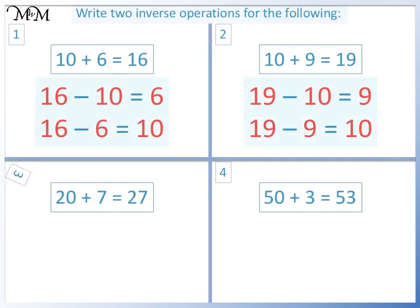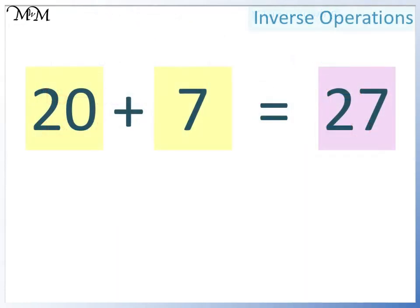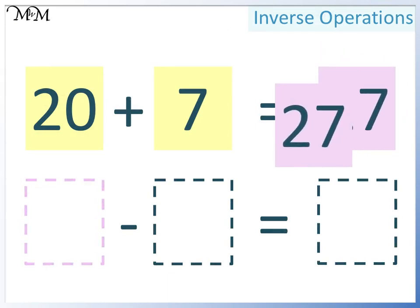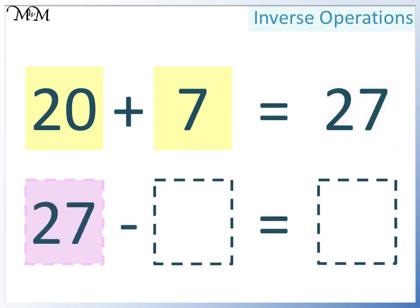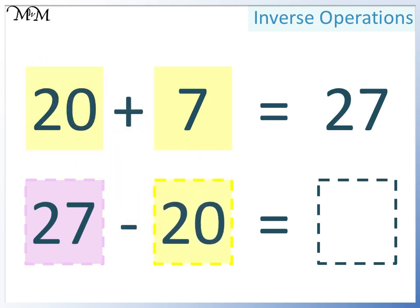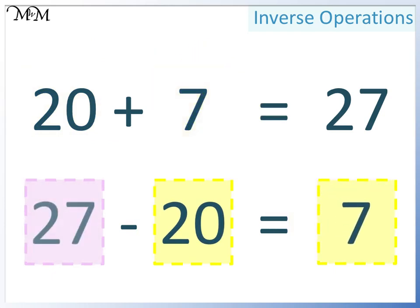Question 3: 20 plus 7 equals 27. The largest number goes at the start, followed by either of the two smaller numbers. This time, we'll write 20. In the final space, we must write 7. 27 take away 20 equals 7.